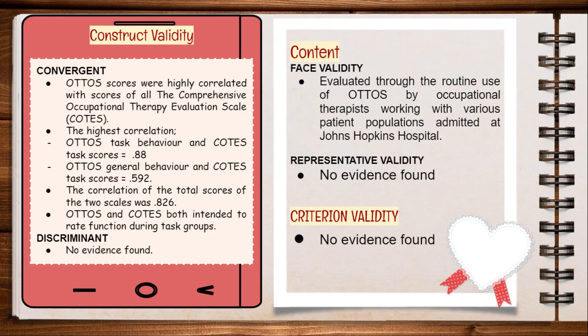Next is the validity of OTOS. First is construct validity, which consists of convergent and discriminant validity. For convergent validity, OTOS scores were highly correlated with scores of the Comprehensive Occupational Therapy Evaluation Scale, COTES. The highest correlation between OTOS task behavior and COTES task scores was 0.88, indicating very strong correlation. The score for OTOS general behavior and COTES task scores was 0.592, indicating moderate correlation. The correlation of the total scores of the two scales was 0.86, indicating very strong correlation. The high correlation is because COTES was also intended to rate function during task group.